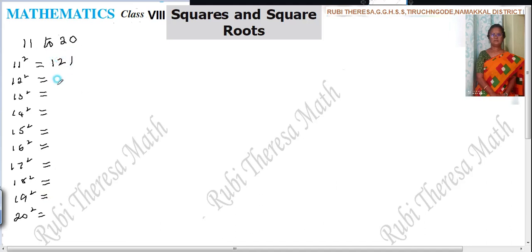That is 121, 144, 168, 196, 225. Here up to this very well. Here also you can write it fast.